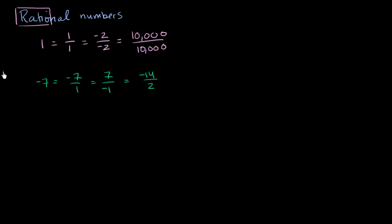But what about things that are not integers? For example, let us imagine, oh, I don't know. Let's imagine 3.75. How can we represent that as the ratio of two integers?